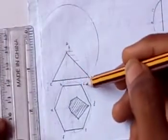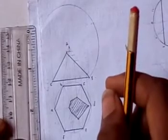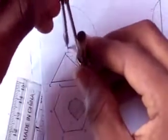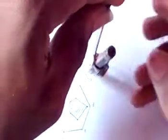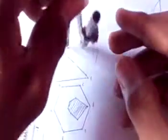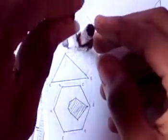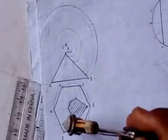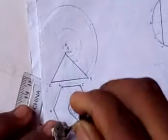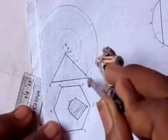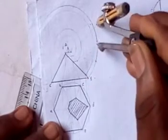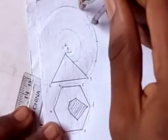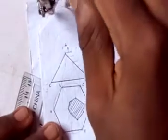We transfer four intersection points to the right — we don't need to transfer the center line. So we transfer the first, second, third, and last points. These are the only points we need. Then we cut off equal sections for the sides of the hexagon — each section is 6 centimeters. Marking 1, 2, 3, 4, 5, 6 — these are the six vertices of the hexagon.